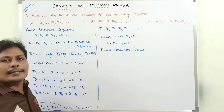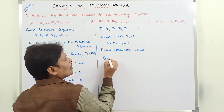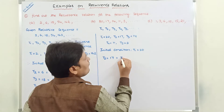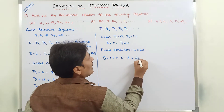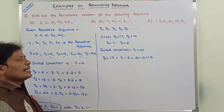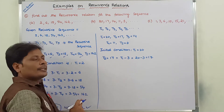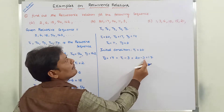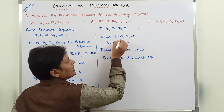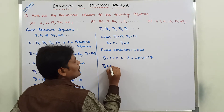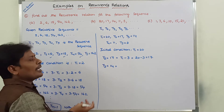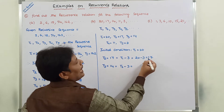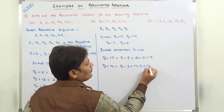The next term T2 = 17 can be defined in terms of T1 as T1 − 3 = 20 − 3 = 17. T3 = 14 can be defined in terms of T2 as T2 − 3 = 17 − 3 = 14.